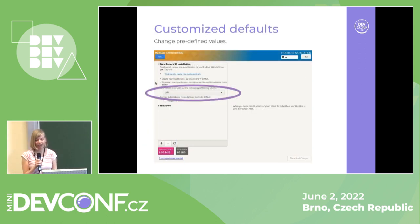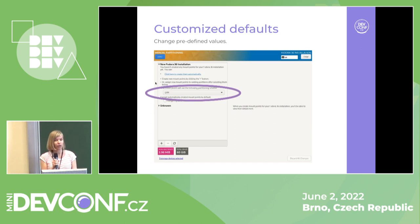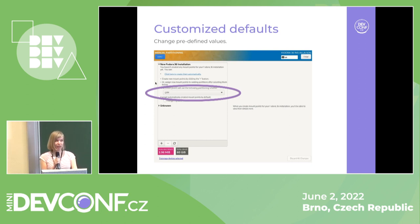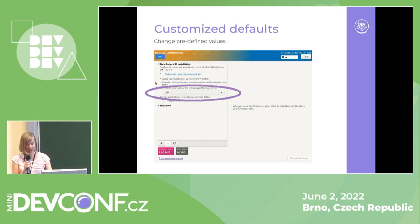The other thing is customizing defaults. When we have UI elements in the code, you want to control what's going to be displayed there by default, because in the ideal case you don't want users to click on it. Ideally they would just be happy with the defaults and continue with what they need to do. But different distributions have different expectations, policies, directions, and user groups, so they don't agree on these values. So you need a way to customize them as well.